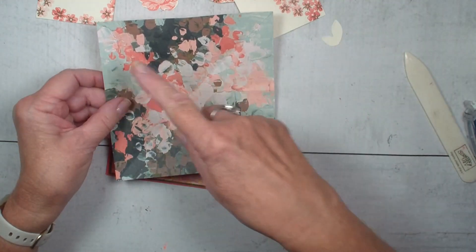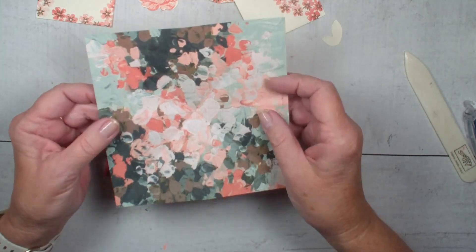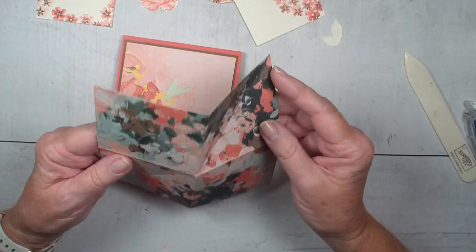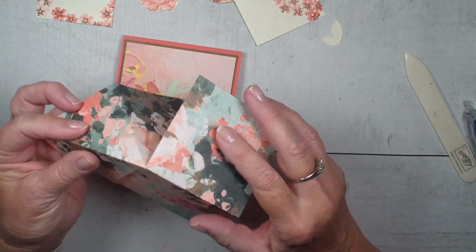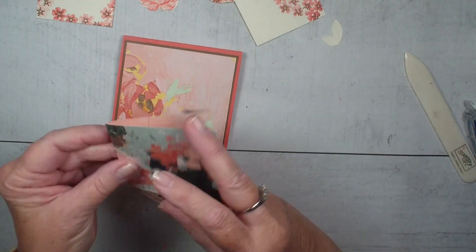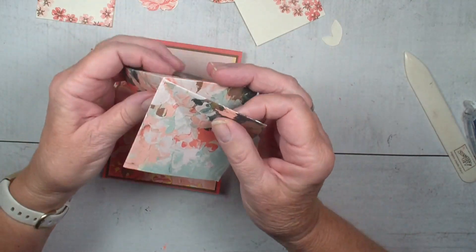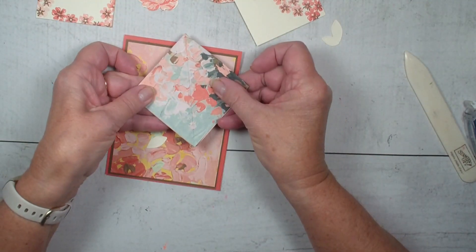So diagonal both ways, in half both ways. Then what I'm going to do is fold these in, these two ends, to make a square like so.